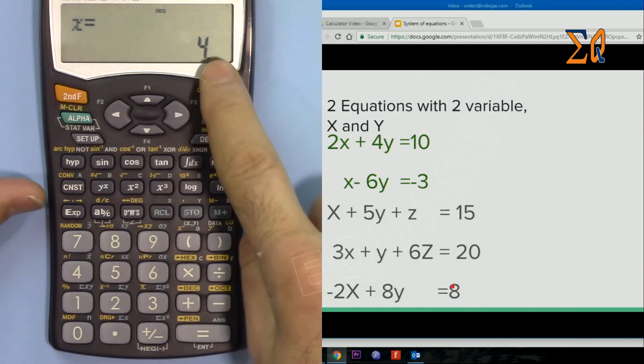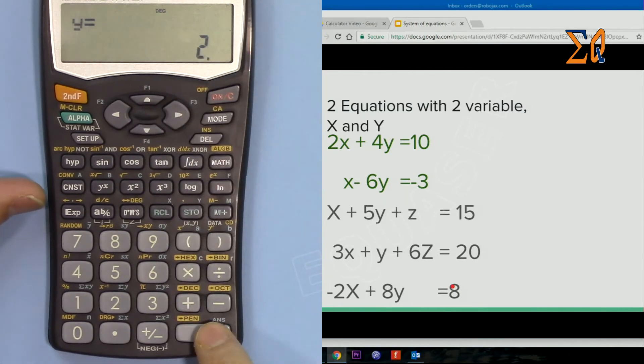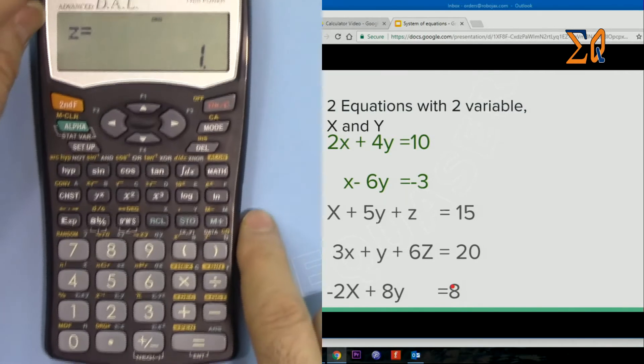Now the answer: X is 4, Y is 2, and then Z is 1. This is how you can use this calculator to find a system of two or three equations.